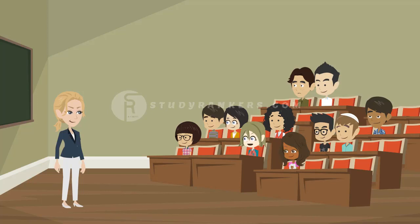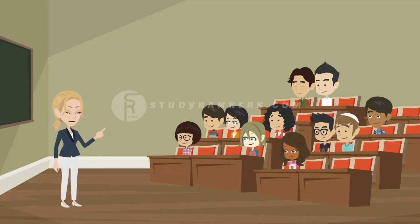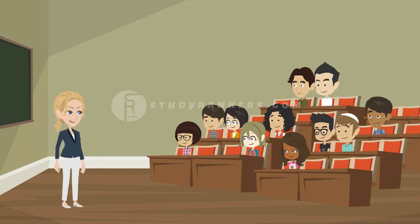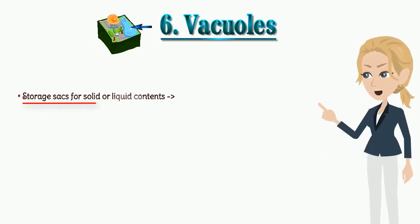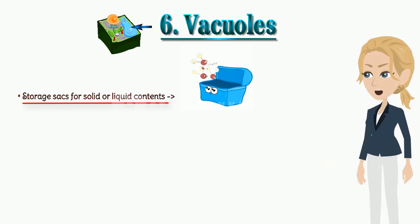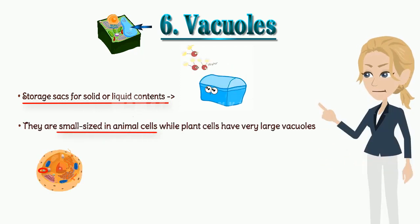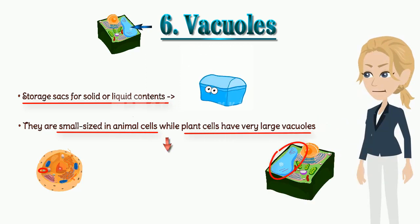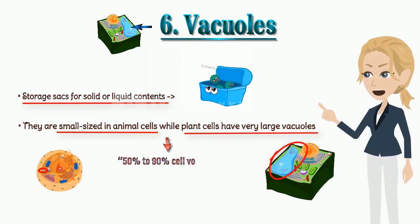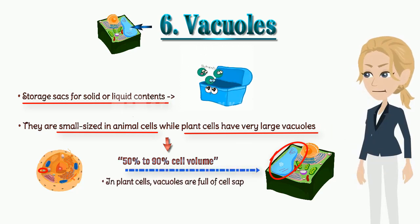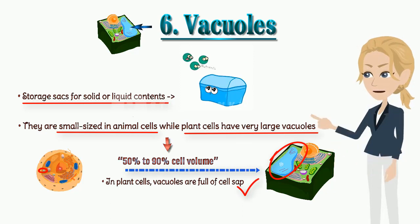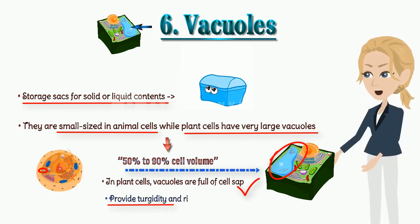Due to these organelles, our body is able to perform functions. You all know the difference between plant and animal cells. Can anyone tell me what vacuoles are? Vacuoles are storage for solid, liquid, and different types of materials. Very good, Rohit. Vacuoles are storage sacs for solid or liquid contents. They are small sized in animal cells, while plant cells have very large vacuoles, occupying 50% to 90% of cell volume. In plant cells, vacuoles are full of cell sap and provide turgidity and rigidity to the cell.